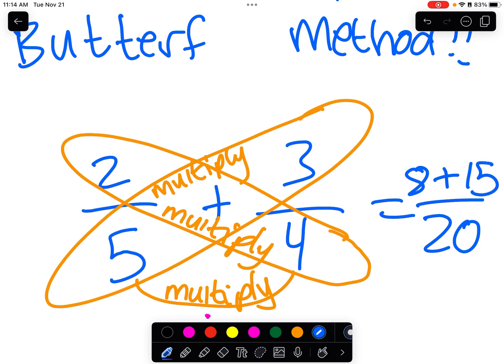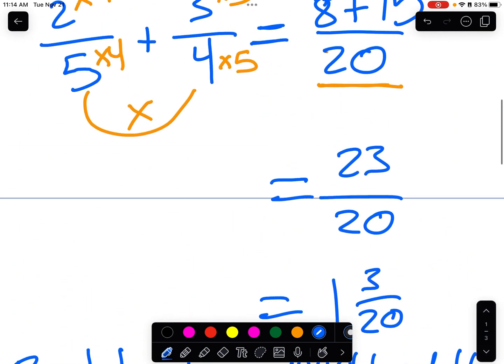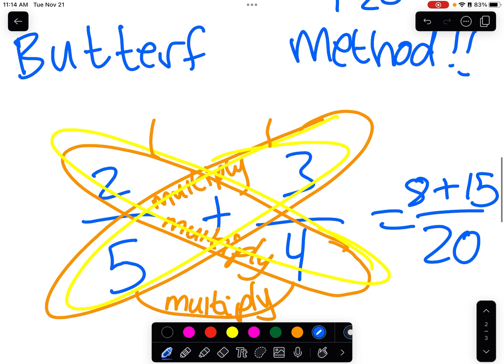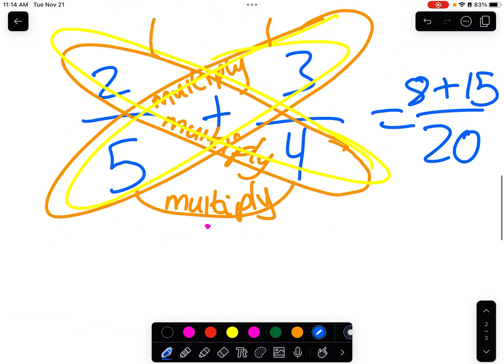That's 15. Now, the reason this is called the butterfly method is it looks kind of like a butterfly. I suppose we could even throw on some antennas there. That really does look like a butterfly. So, just like in our previous method, 8 plus 15 over 20, here we also have 8 plus 15 over 20, or 23 20ths.